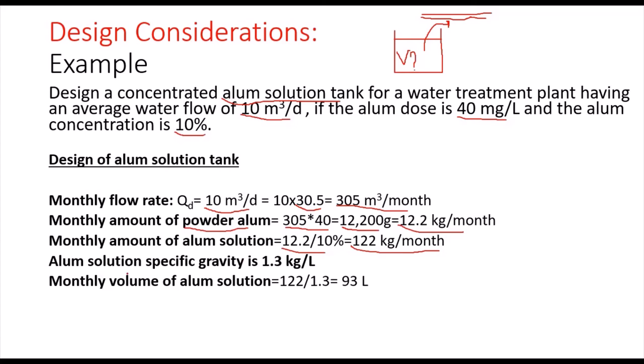We know that the alum solution specific gravity is 1.3 kilograms per liter. So the monthly volume of alum solution will be 122 divided by 1.3. So the volume of my tank will be 93 liters.